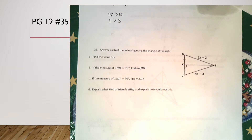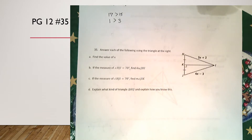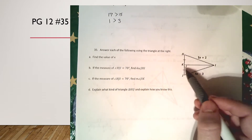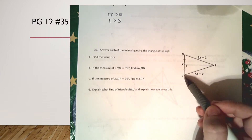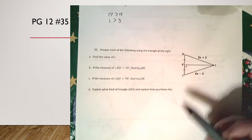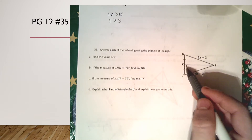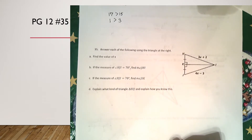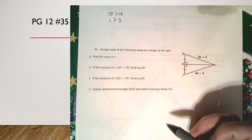Now on that same page we're looking at number 35. It says answer each of the following using the triangle at the right. Part one is to find x. In order to find x I need to know that the sides from J to K and K to H are congruent. I also have a right angle here, and since it's a straight line, I'd also have a right angle on the other side because 90 plus 90 equals 180.